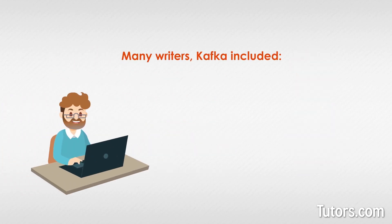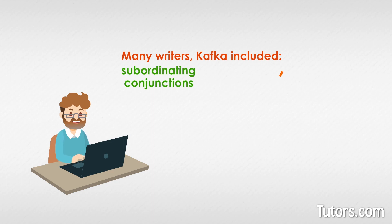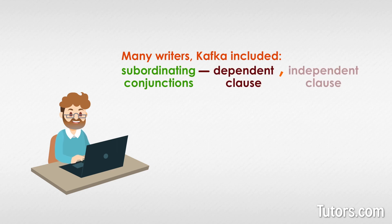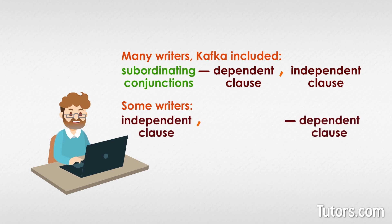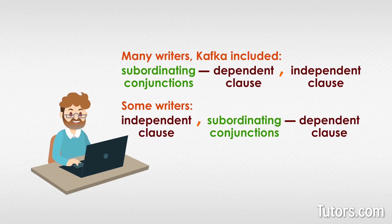Many writers, Kafka included, prefer to put their subordinating conjunctions at the front end of a complex sentence, leaving a comma to link the leading dependent clause and the trailing independent clause. Some writers start with independent clauses and link these verbal powerhouses to dependent clauses with subordinating conjunctions.